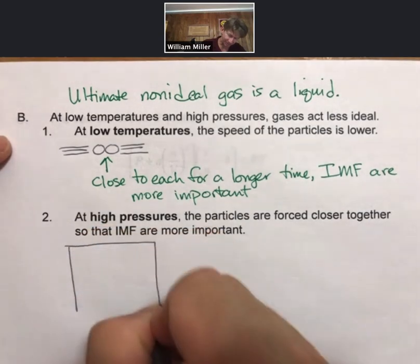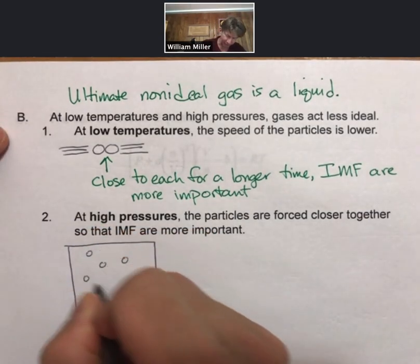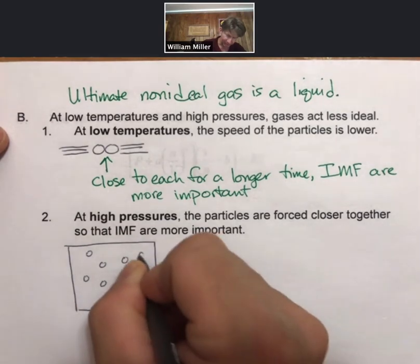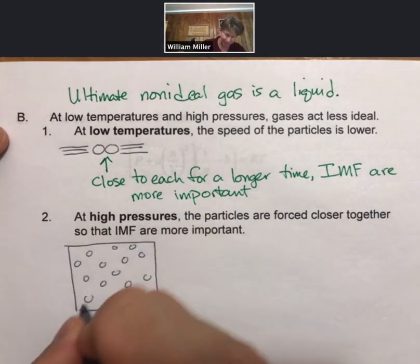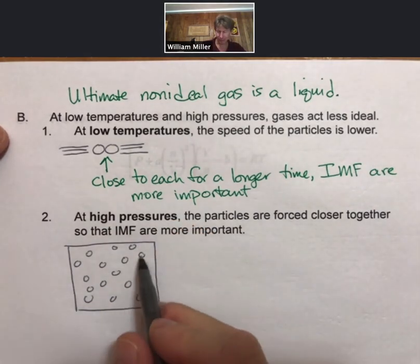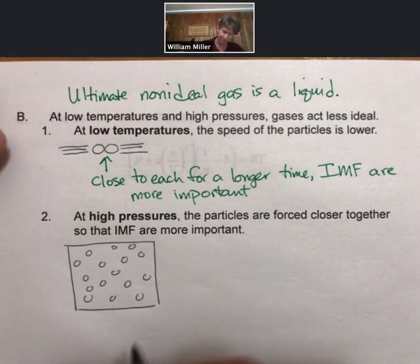But at high pressures, those are going to force those particles closer together. They will no longer be 10 diameters apart, and they're close enough together that the volume of the particles become significant.